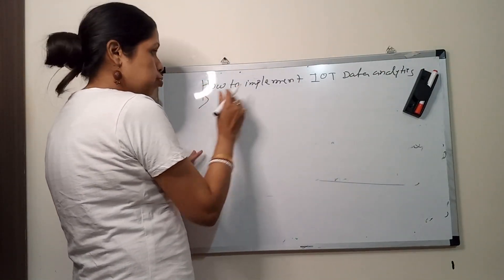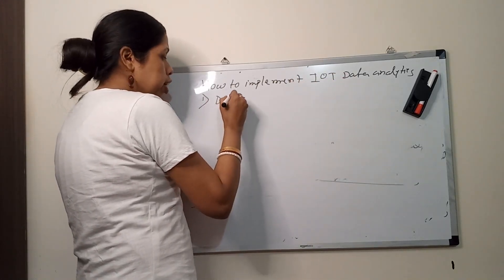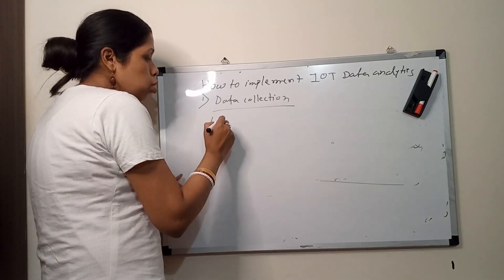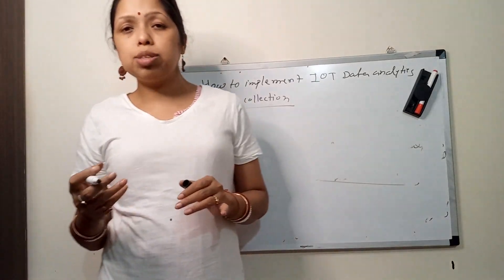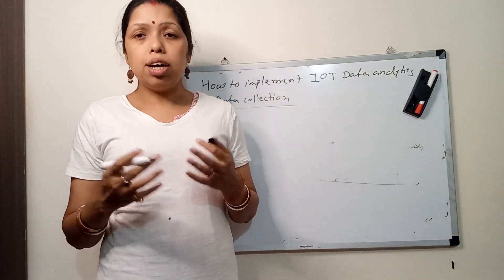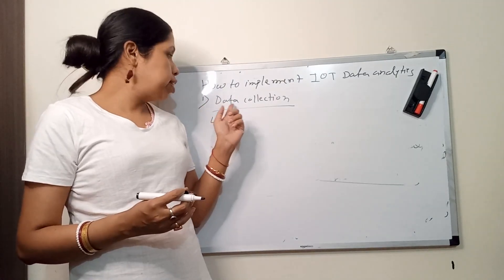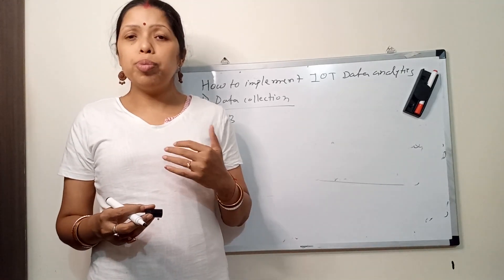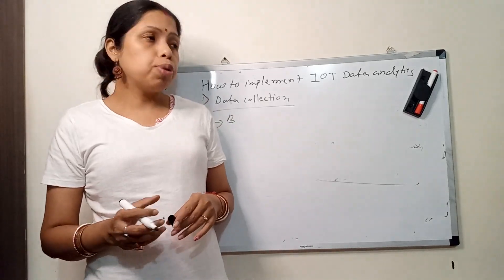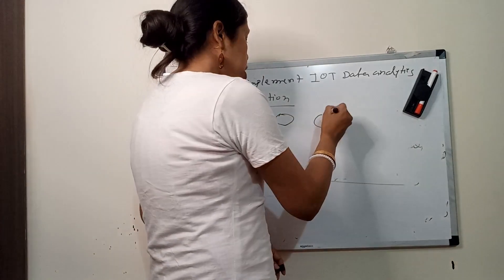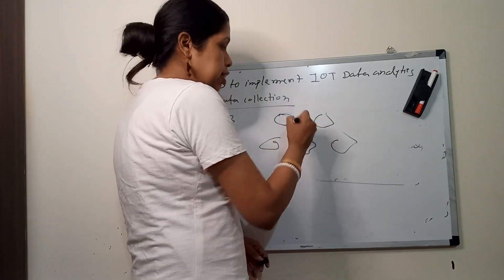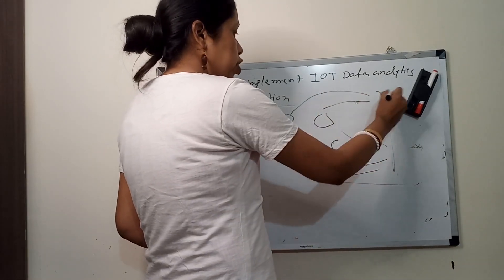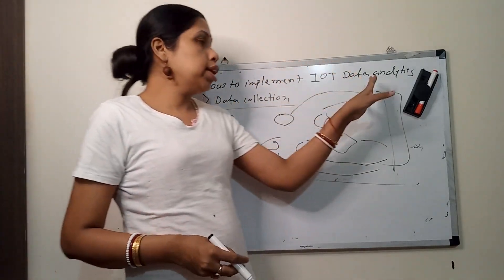The first point for implementing IoT data analytics is data collection. Based on various business requirements, you have to implement various sensors in various fields. Different fields have different sensors, all of which are connected to the other parts of the IoT.